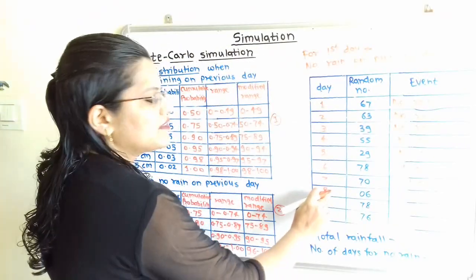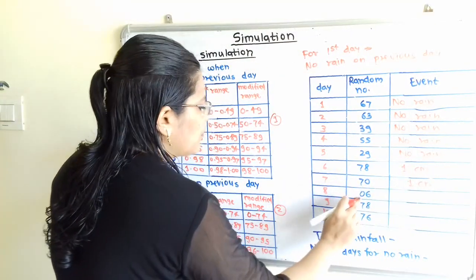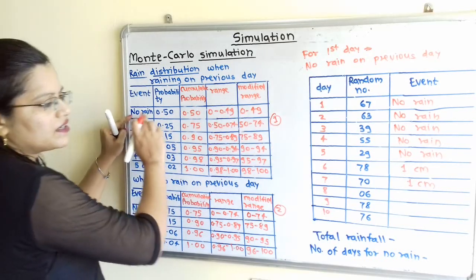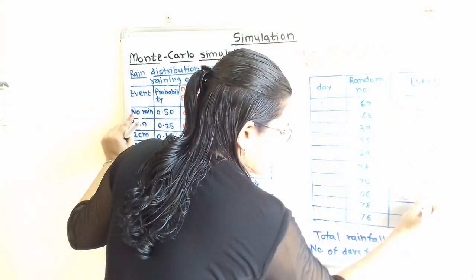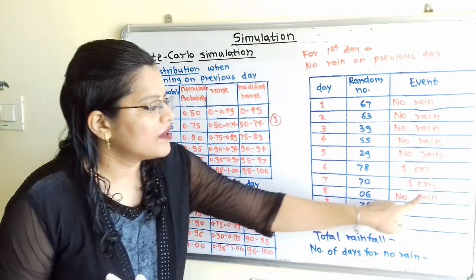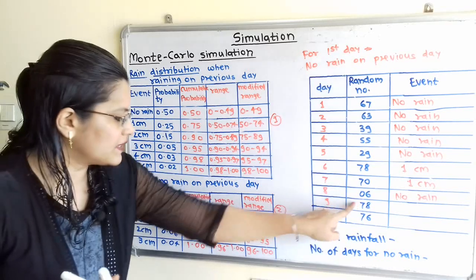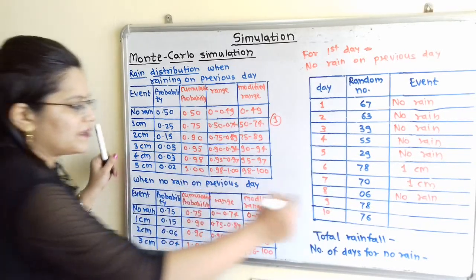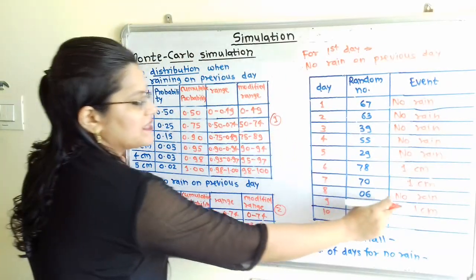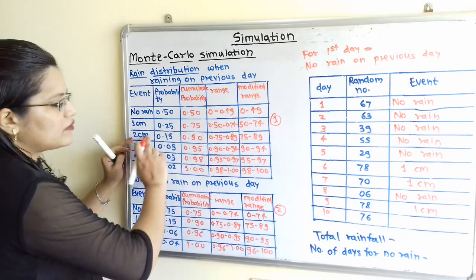For the 8th day also, we refer Table 1 because on the previous day raining occurred. Random number 06 fits in between 0 to 14, with no rain. Now for the 9th day, we refer the table with condition no rain on previous day. Here 78 fits in the second row, that is 1 cm rain. And for the 10th day, we refer Table 1 because on the previous day raining occurred. 76 fits in the third row with 2 cm rain.